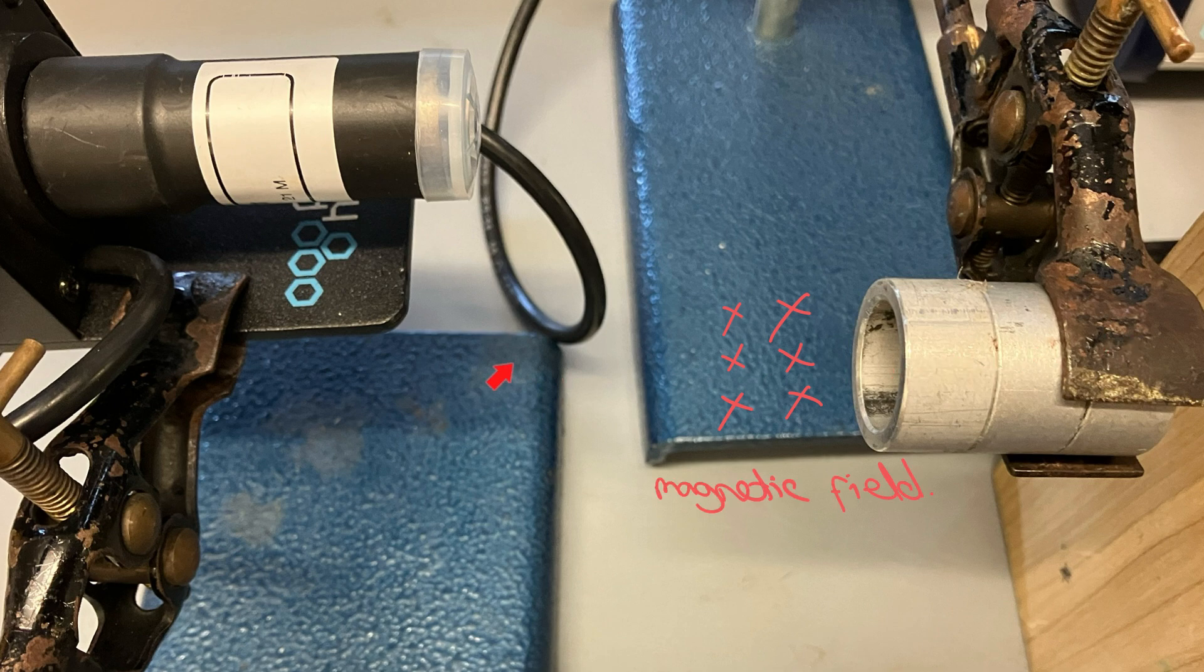The beta minus particles, which are negative electrons, are going this way. And since conventional current is defined as the direction that positive charges would move, we can draw the current going in the opposite direction, this way.